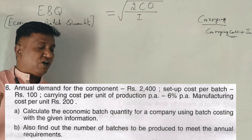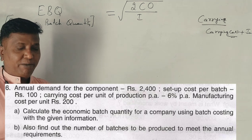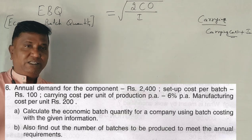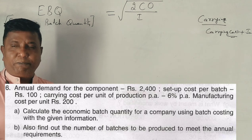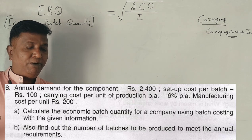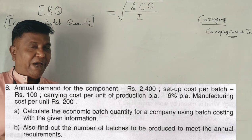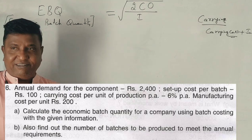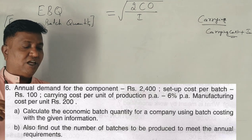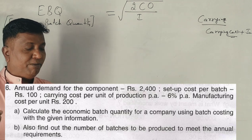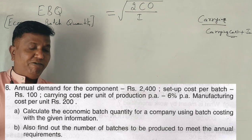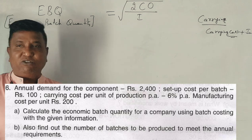Annual demand for the component is 2,400. The setup cost per batch is 100. Carrying cost per unit is 6% per annum. Manufacturing cost per unit is 200. Calculate the Economic Batch Quantity for a company using batch costing with this given information, and also find out the number of batches to be produced to meet the annual demand.